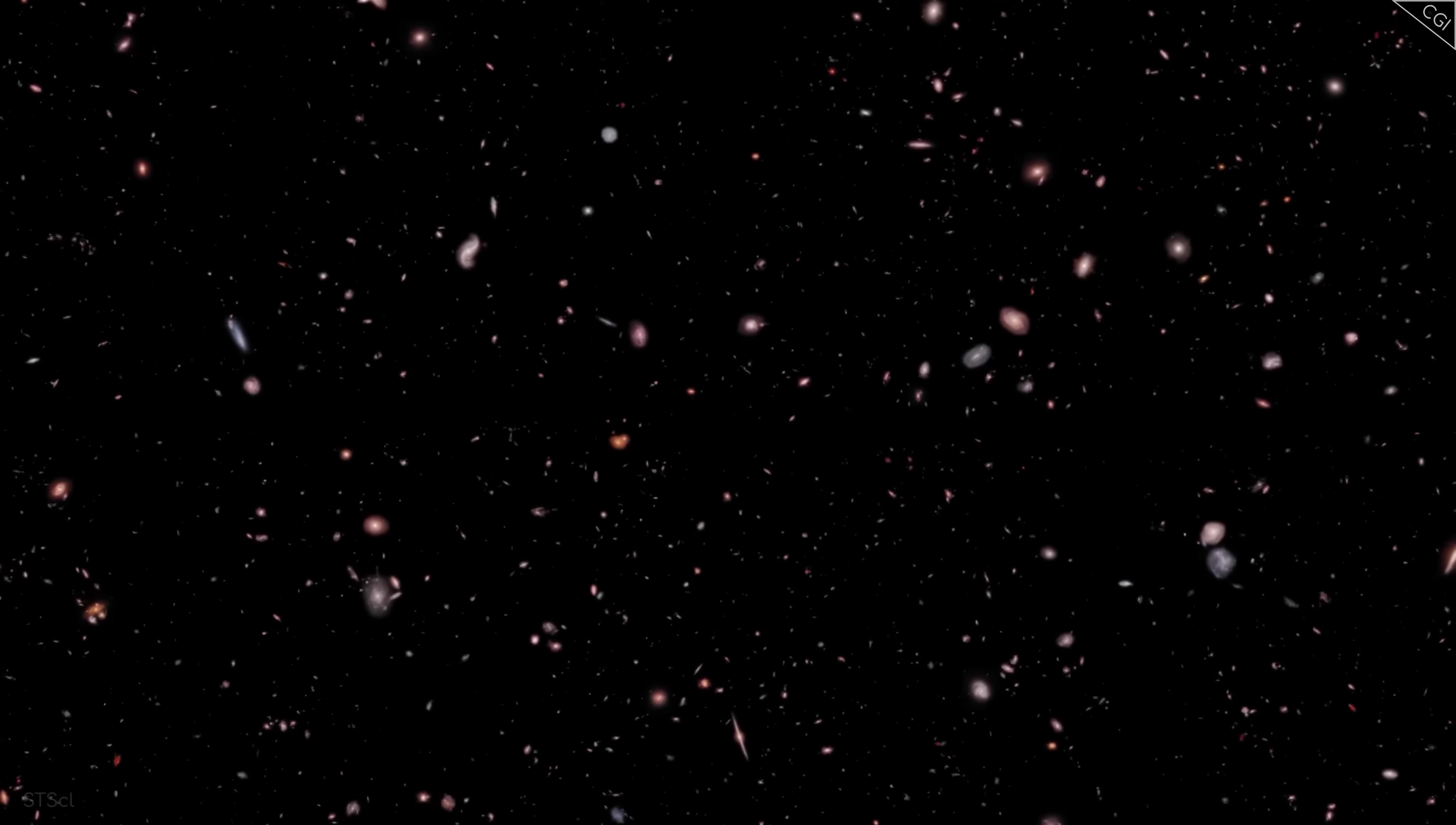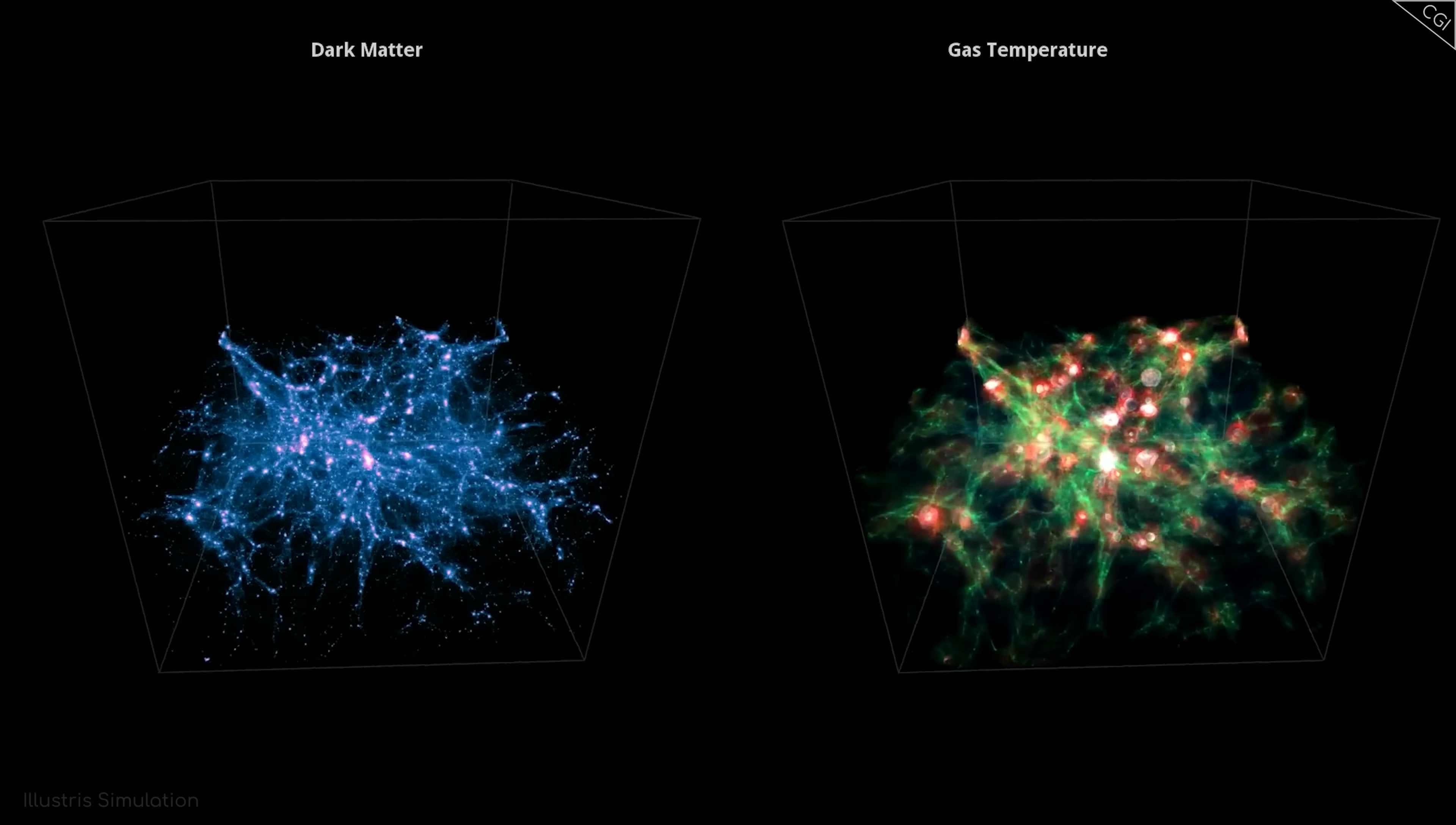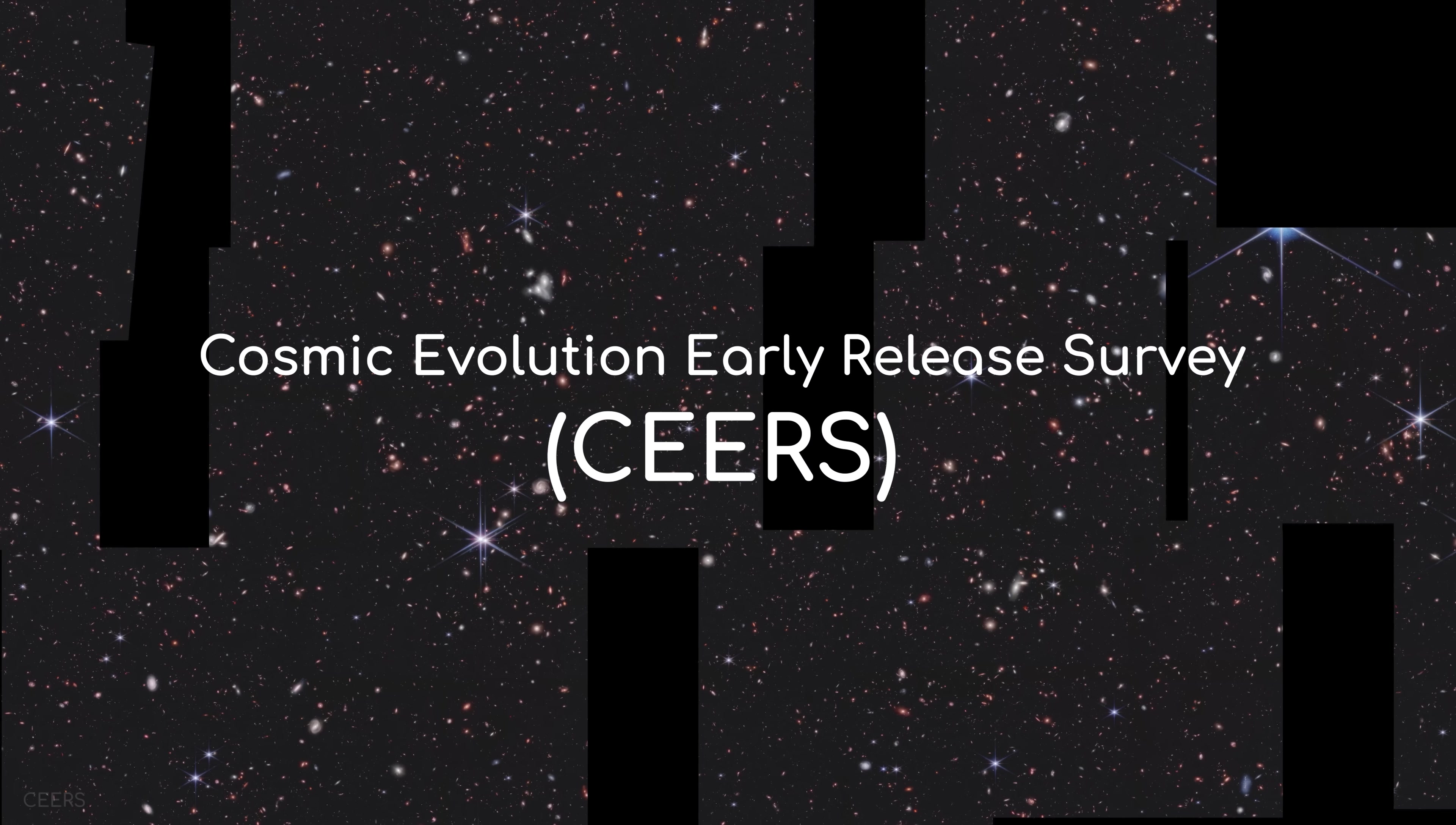Fortunately, some of those problems proved solvable in the months after the data was released. For example, the brightness of the galaxies we could see through Webb. This brightness implied that there were far too many stars present in those galaxies. So many stars should have taken much longer to form. And yet, there they were. Fuzzy red dots at the edge of Webb's resolution. However, scientists at the University of Texas studying Webb's cosmic evolution early release survey realized there could be another explanation for all that excess light. And, counter-intuitively, that explanation was black holes.